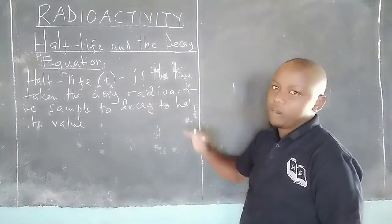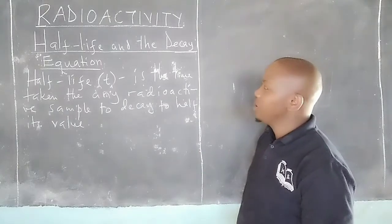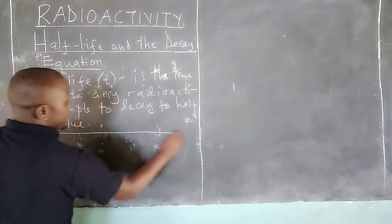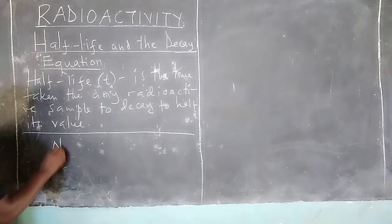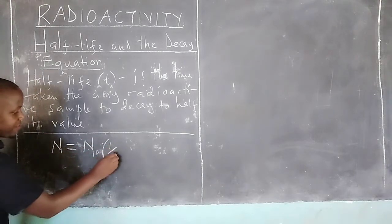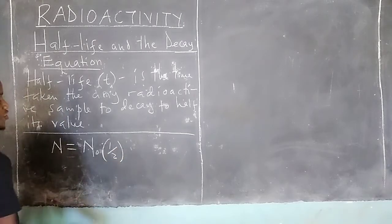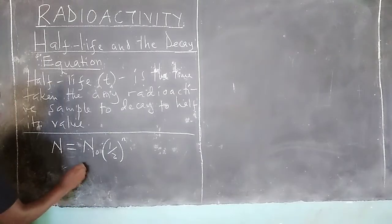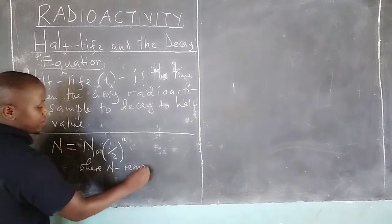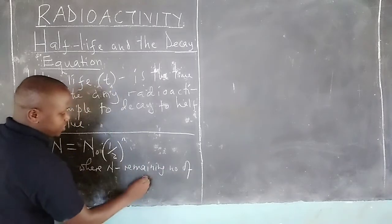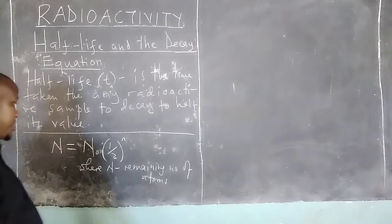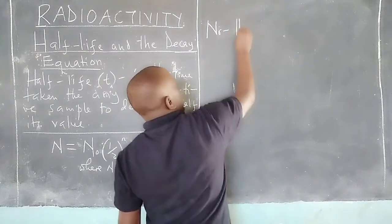We can talk of what we call the decay equation, which says that the remaining number is given by the original number multiplied by half raised to n, where capital N is the remaining number of atoms. In this equation, N is the remaining number of atoms, and N₀ is the original number.